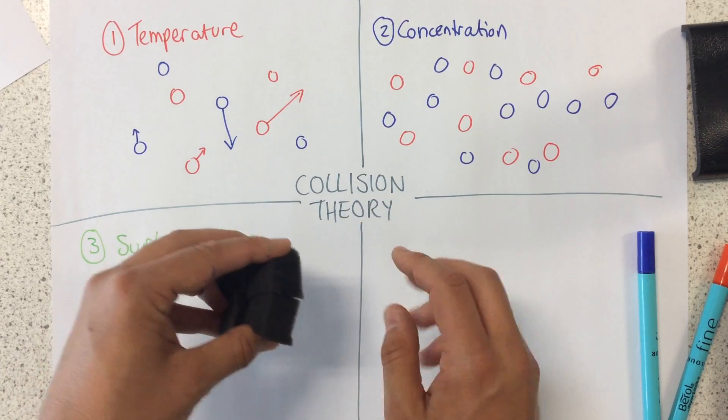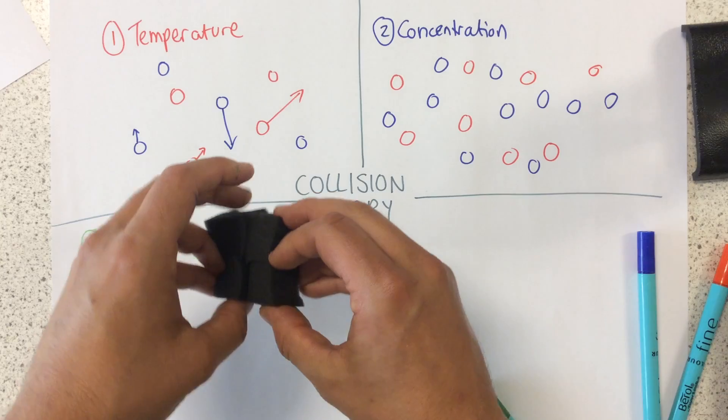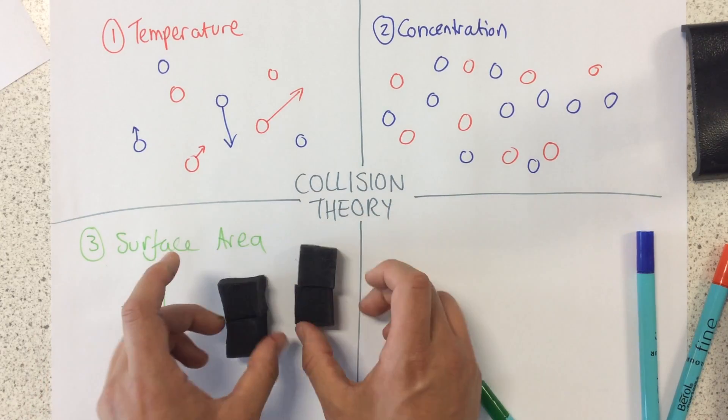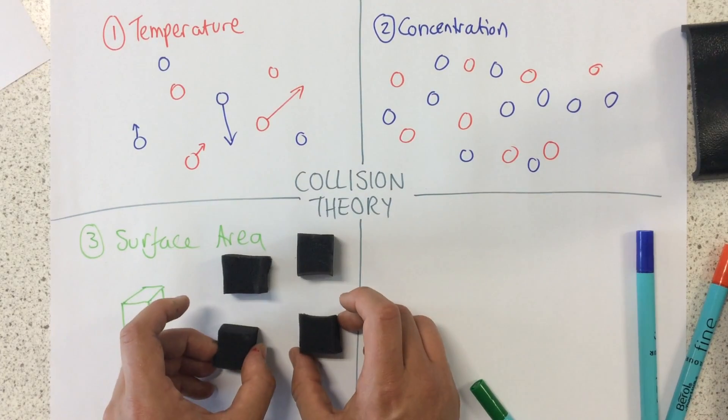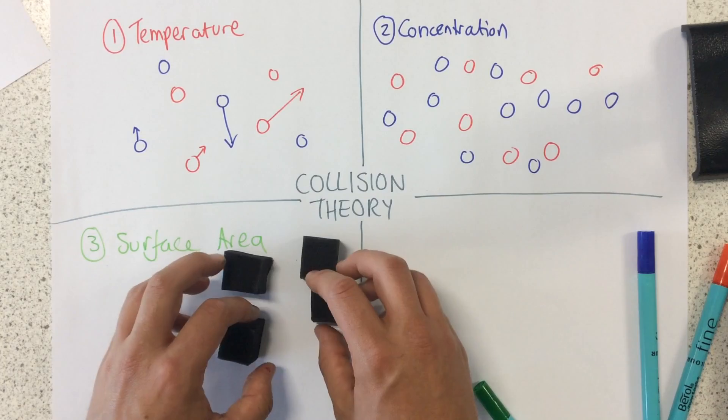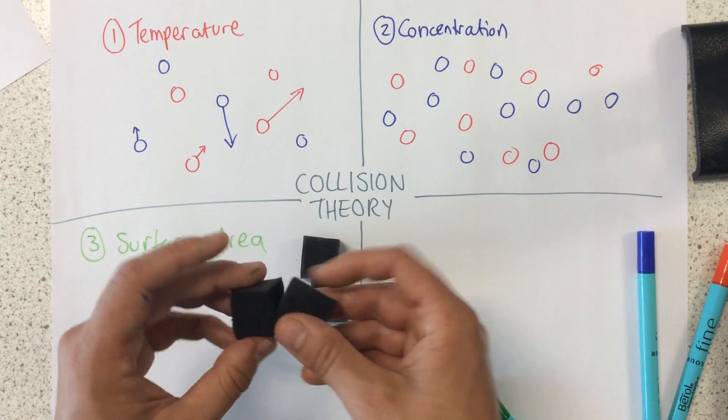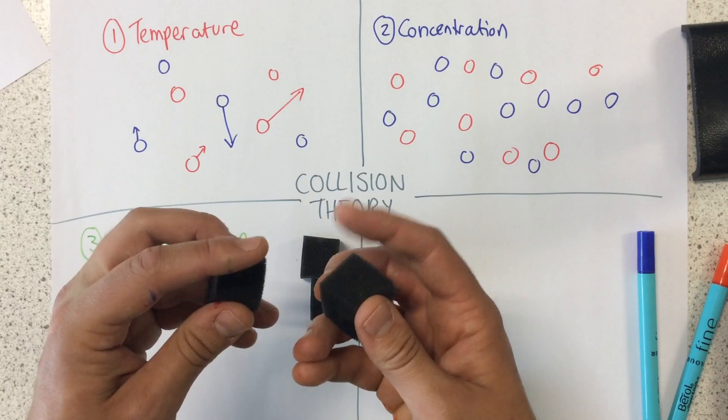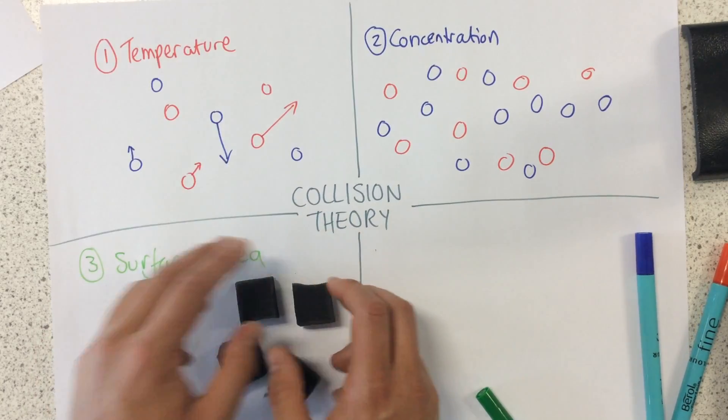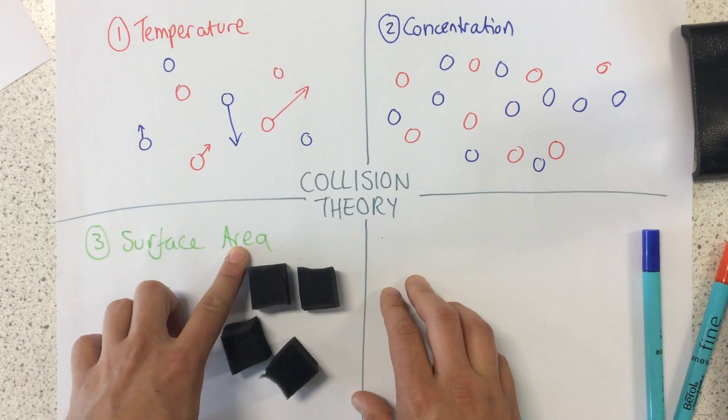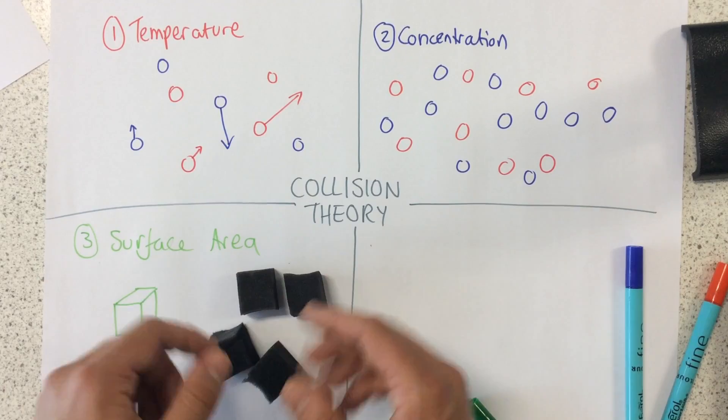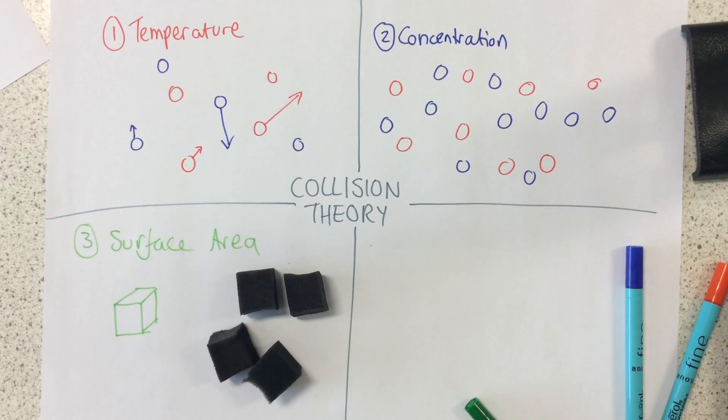If I was to break this into smaller pieces, we can now see there's more surface available for the acid to react on. Because by breaking it apart, we expose more surface to react with. So the greater the surface area, the faster the rate of reaction, because we have more surfaces that can react at any one time.